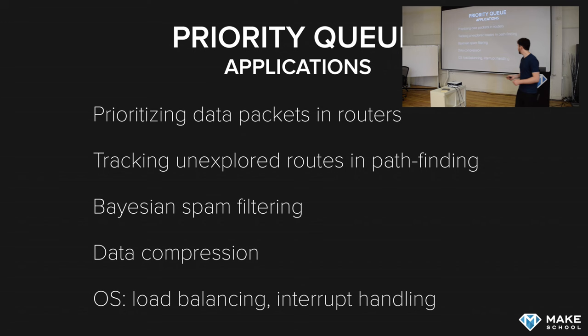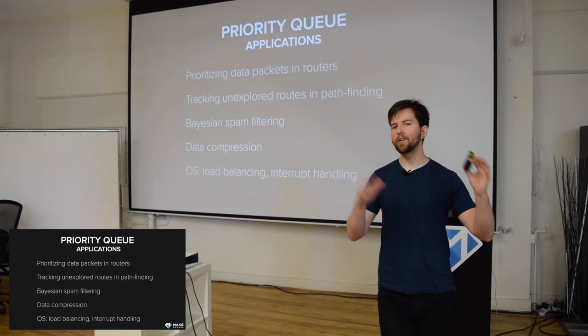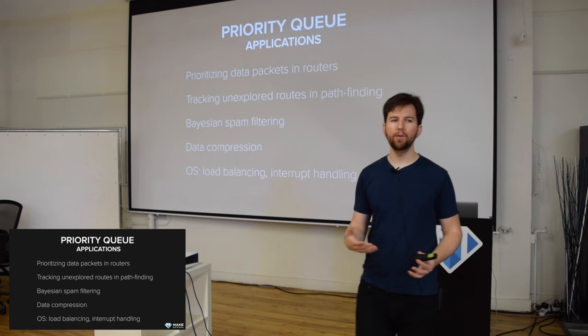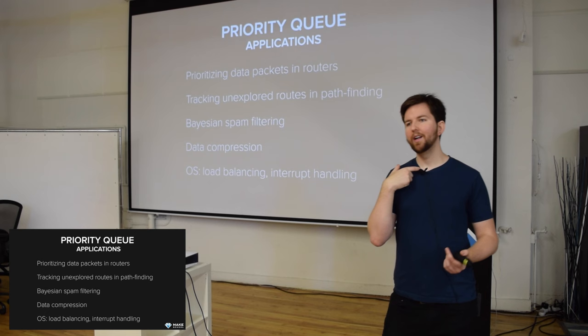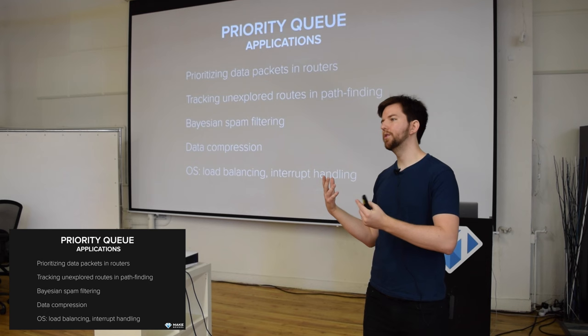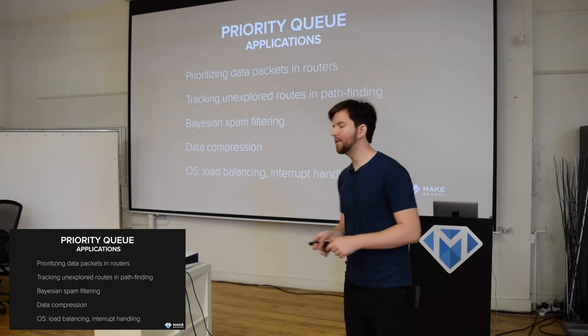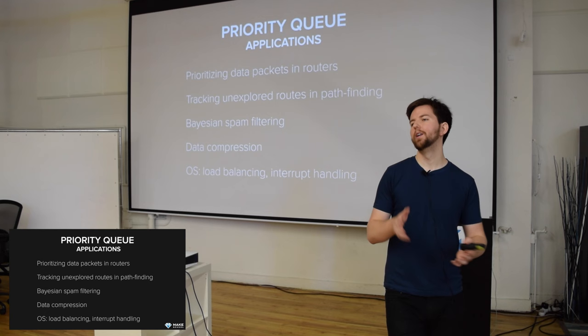Data compression. And finally, in the operating system, load balancing and interrupt handling. In your operating system you have all these different threads, all these different programs vying for execution time on the CPU. So if you have 20 applications open or even 20 Chrome tabs, how does the operating system decide which ones should get more execution and which ones should get less?